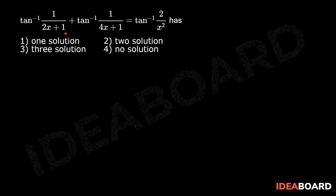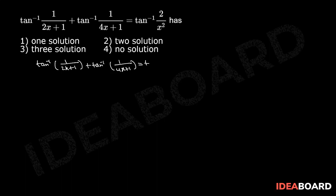The given equation is tan inverse 1 by (2x+1) plus tan inverse 1 by (4x+1) equals to tan inverse 2 by x square. Here, clearly x equals 0 satisfies this equation. Therefore x equals 0 is one of the solutions.